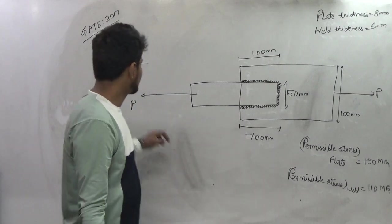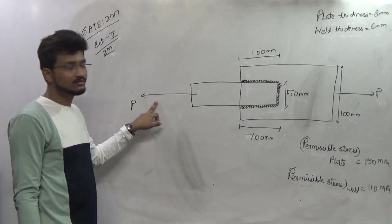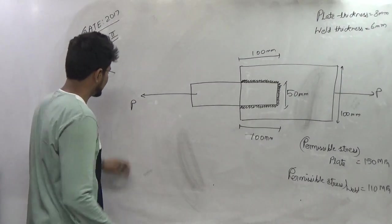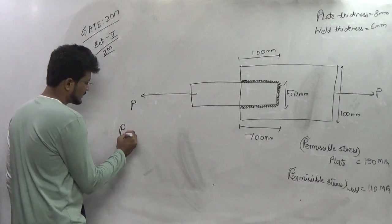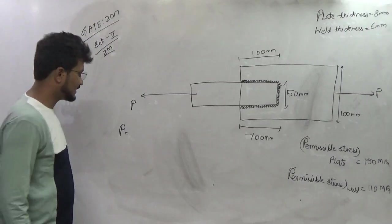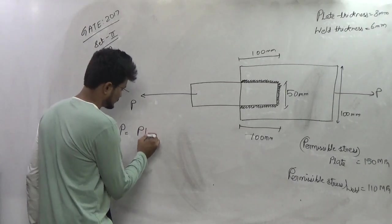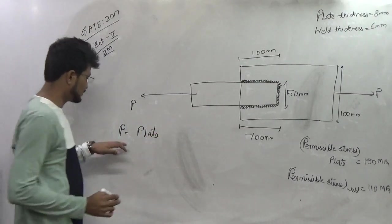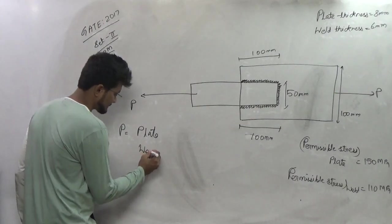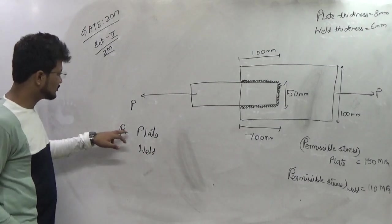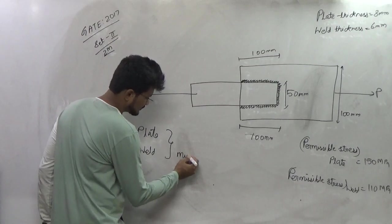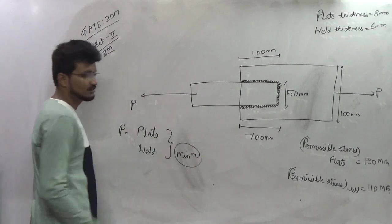So we have to find out the permissible value of the load which we can apply on this particular plate. Now this load value we can calculate by two forms: the load which can be taken up by the plate, or the load value which can be resisted by the fillet weld. So we will calculate the load value from both these conditions and the minimum of these two will be the permissible load value.